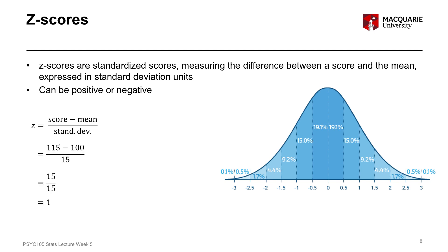Here is the formal formula for calculating Z scores. The formula is: the individual score minus the overall mean score, divided by the standard deviation. So if we were to calculate a Z score for Joe's particular score, that would be Joe's score of 115, minus the overall population mean of 100, divided by 15 — which gives us 15 over 15, which gives us a score of 1. So Joe has a Z score of 1, representing that she is one standard deviation above the mean on intelligence.